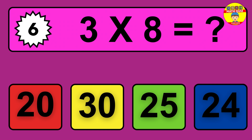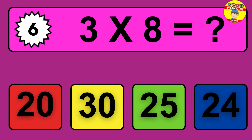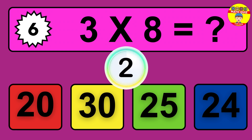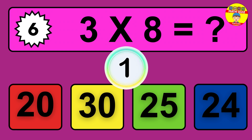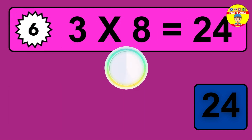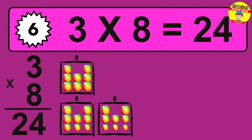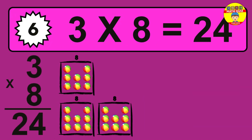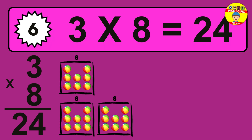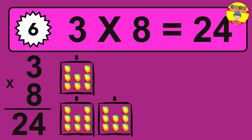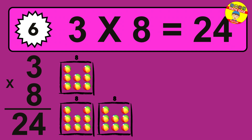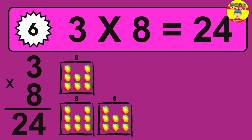Question 6. 3 times 8 equals what? The answer is 3 times 8 is 24. To calculate, we have 3 groups with 8 balls each one. So how many balls do we have? 24 balls.